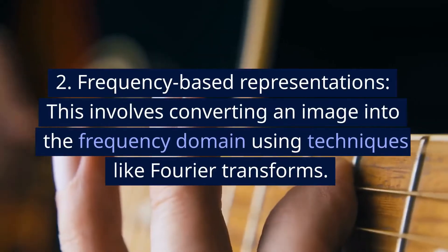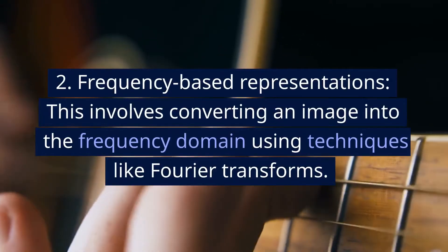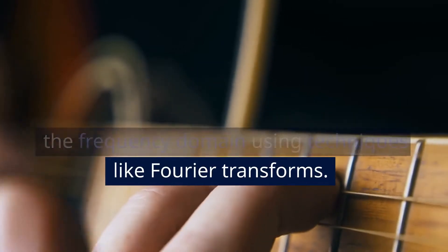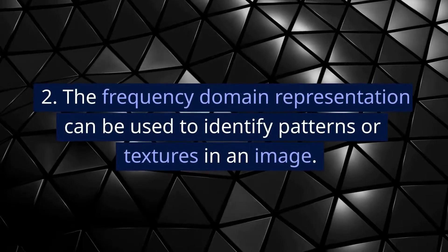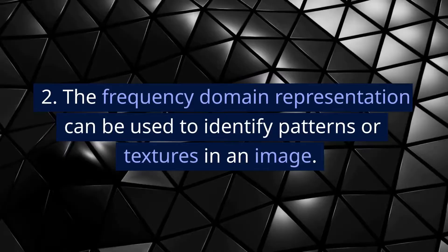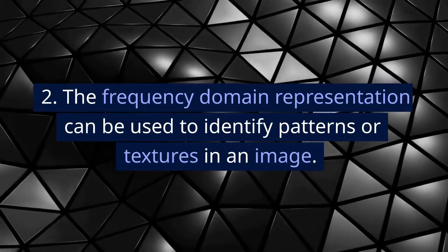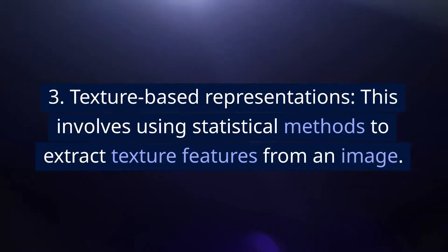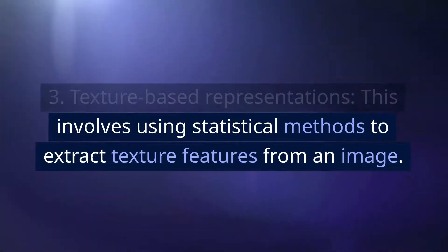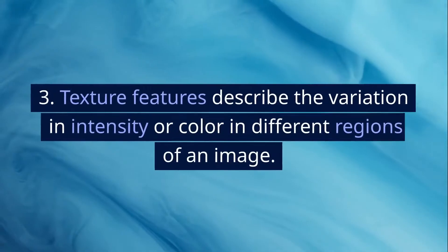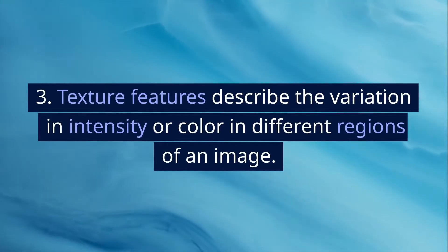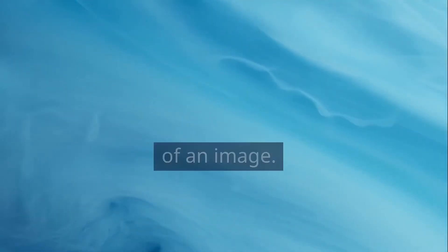2. Frequency-based representations. This involves converting an image into the frequency domain using techniques like Fourier transforms. The frequency domain representation can be used to identify patterns or textures in an image. 3. Texture-based representations. This involves using statistical methods to extract texture features from an image. Texture features describe the variation in intensity or color in different regions of an image.